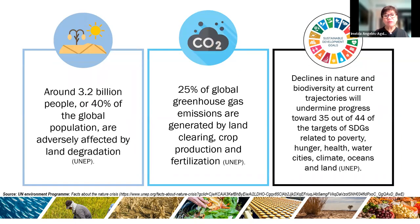Around 3.2 billion people, or 40 percent of the global population, are adversely affected by land degradation. About 25 percent of global greenhouse gas emissions are generated by land clearing, pre-production, and fertilization. Declines in nature and biodiversity at current trajectories will undermine progress towards 35 out of 44 targets of the SDGs related to poverty, hunger, health, water, cities, climate, oceans, and land.